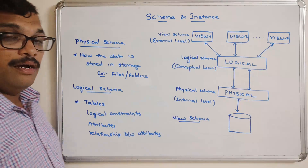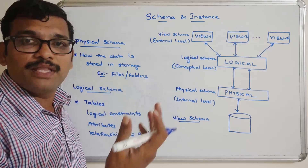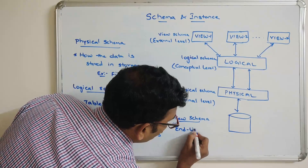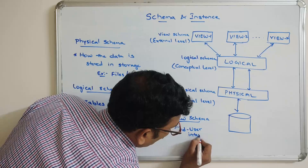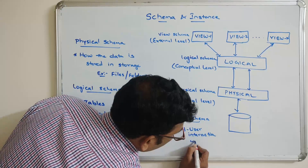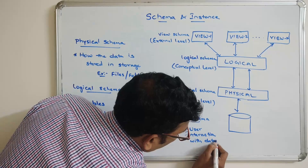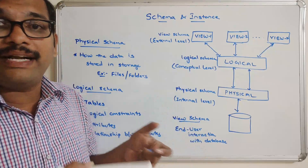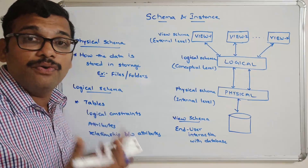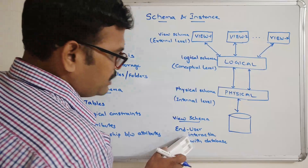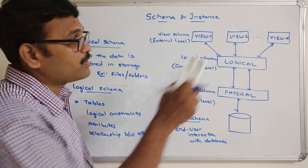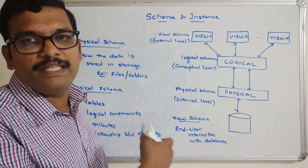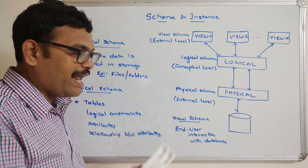Coming to the view schema — this deals with how the end user interacts with the database. Different users will view the database differently, so we have multiple views. Based upon the user, the view will change. This is called end user interaction with the database.